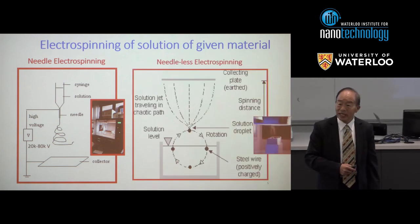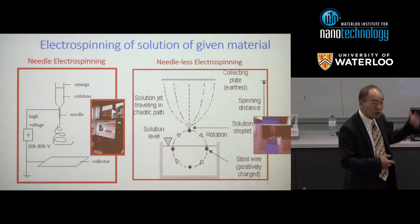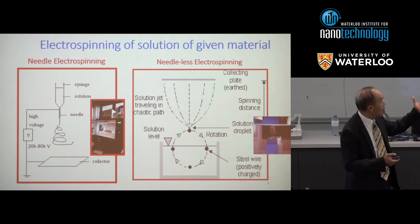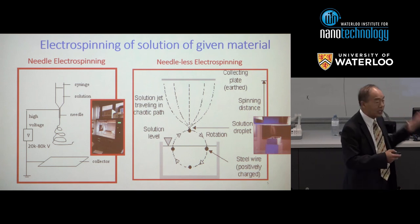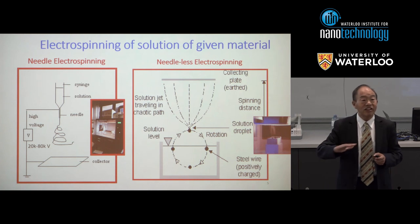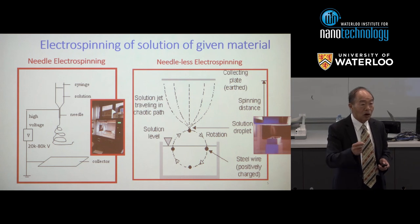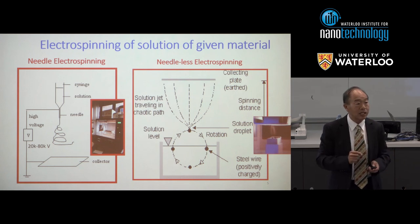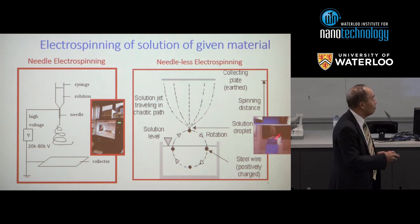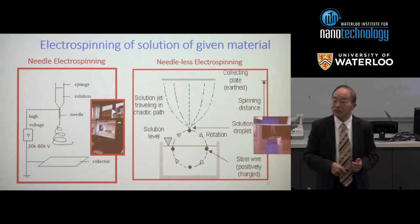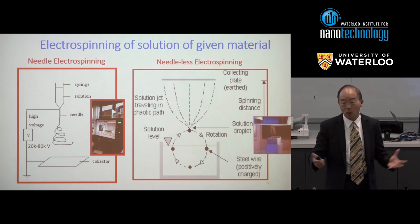Using a single needle takes a long time — my student can spend 24 hours making a nanofiber mat. Later on, we use many jets in what we call a needleless machine. You lay a very thin film of liquid onto a surface, and as the film becomes thin and the electrical force is large, you can instigate many, many jets from a single source. This is the basis of the needleless electrospinning machine, which produces larger quantities of nanofibers.